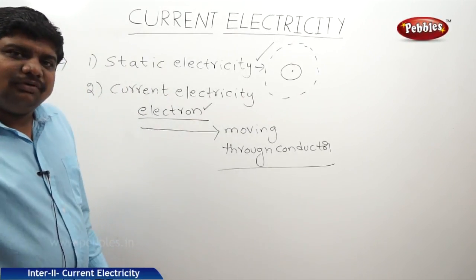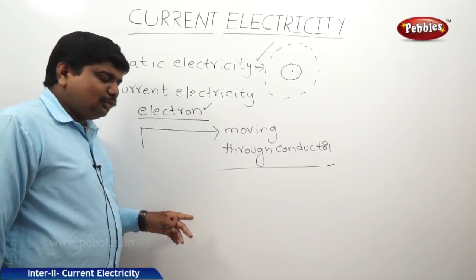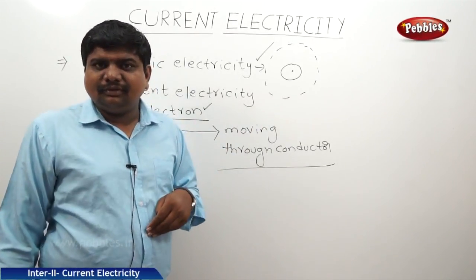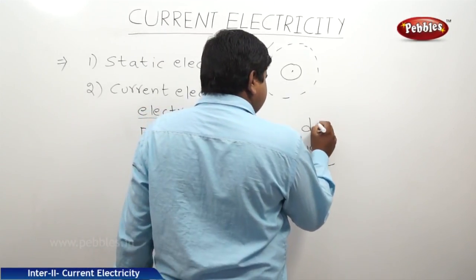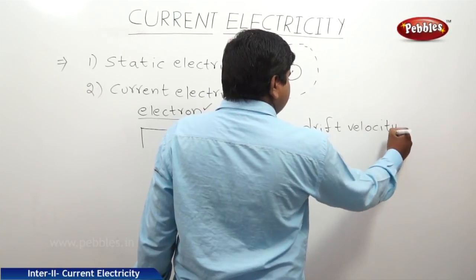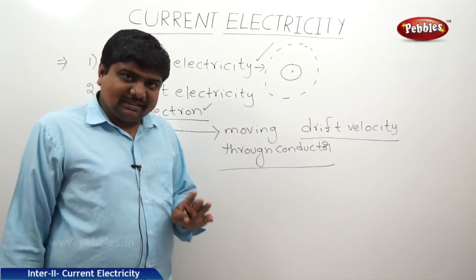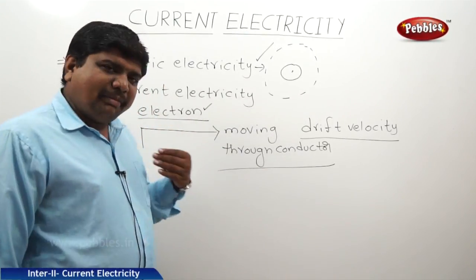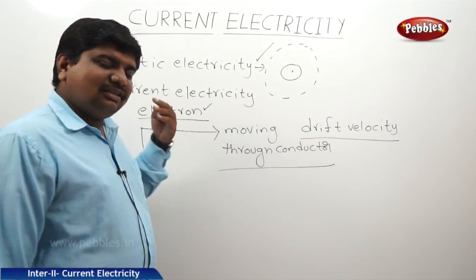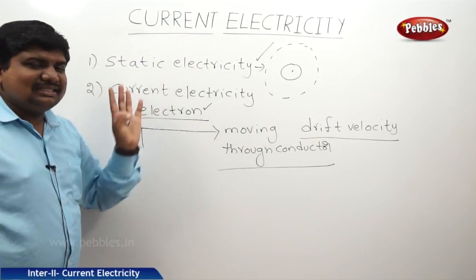And whenever a small amount of the field is applied to this conductor, because of the applied field, the electrons will move from one end of the conductor to the other end with a velocity. This velocity is also called drift velocity. Whenever these electrons are moving through the conductors, they will face many difficulties to overcome the resistance and many other mechanical forces. These are all we are discussing in this lesson.